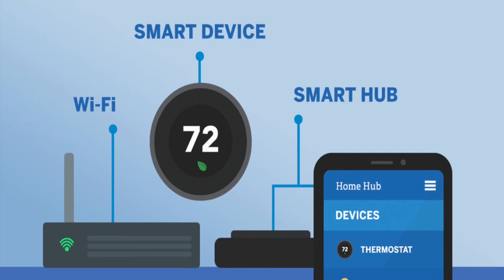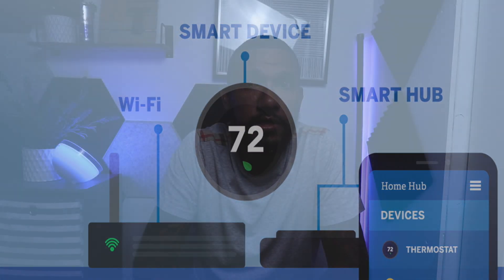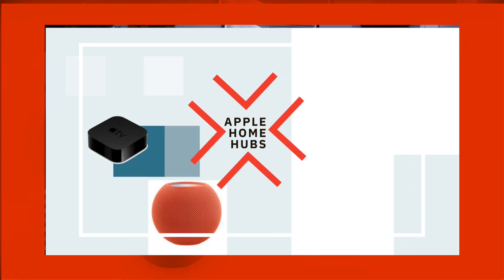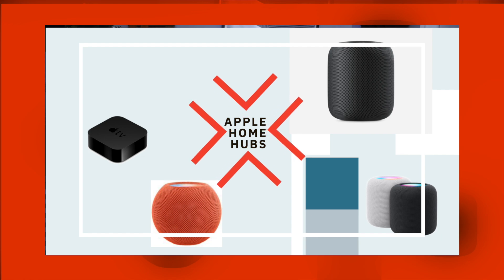You also need smart devices and a smart hub. In my case I have Apple Home, which means that in order for me to automate things in my home I need a home hub. I can use an Apple TV, HomePod mini, OG HomePod, or the new HomePod generation 2 — any of these devices will serve as your home hub.